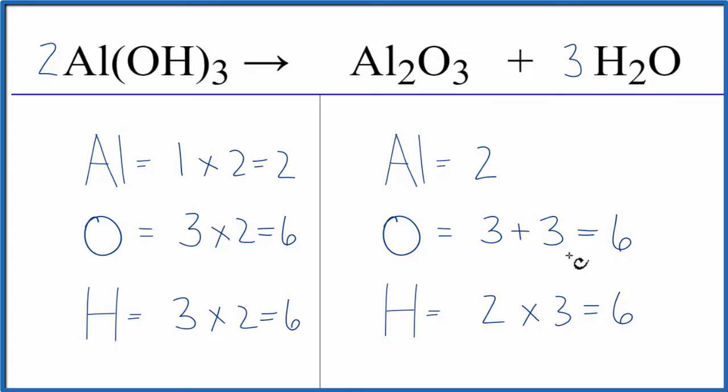And that balances the equation. So the trick here is when we had those two odd numbers, we multiplied AlOH3, the aluminum hydroxide, by a coefficient of two to get those to be even numbers. And then that allowed us to change things on this side of the equation to get it balanced.